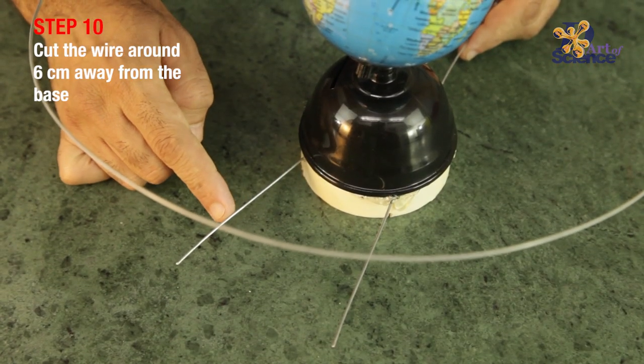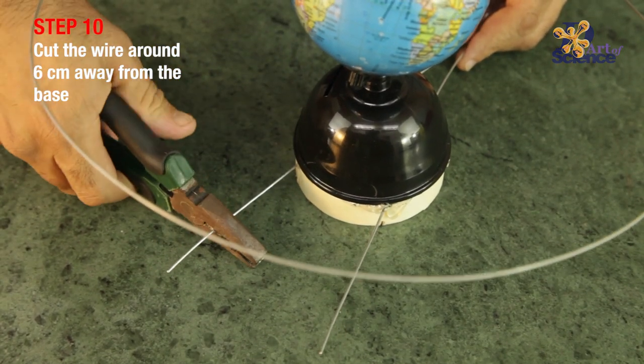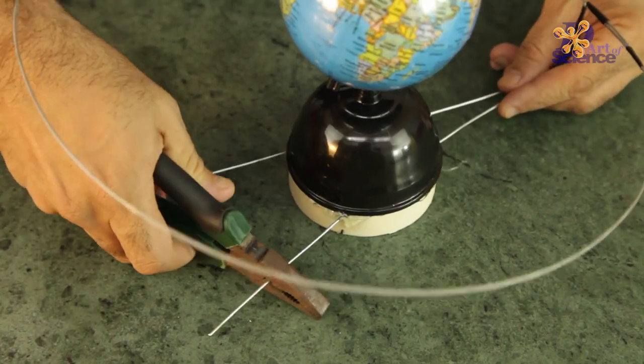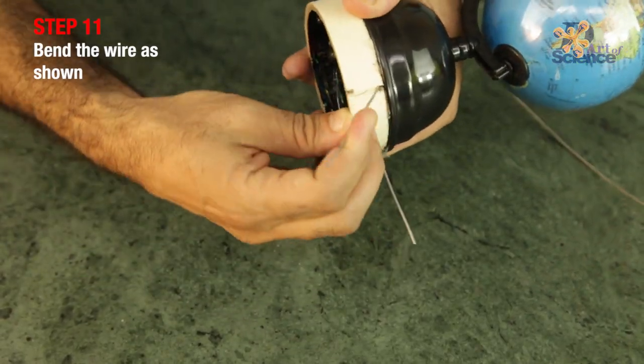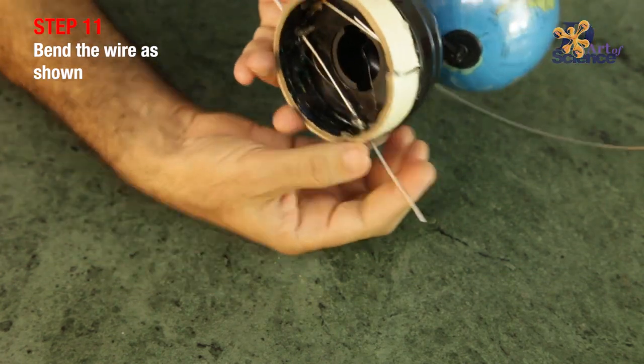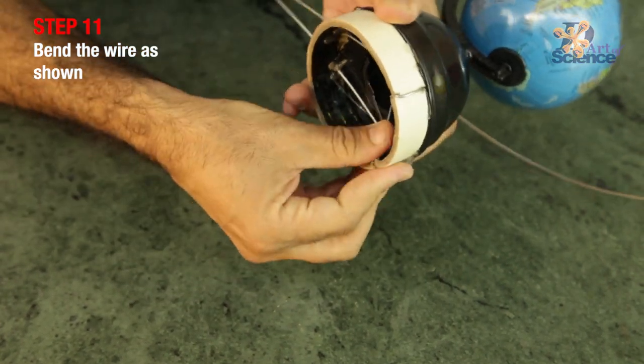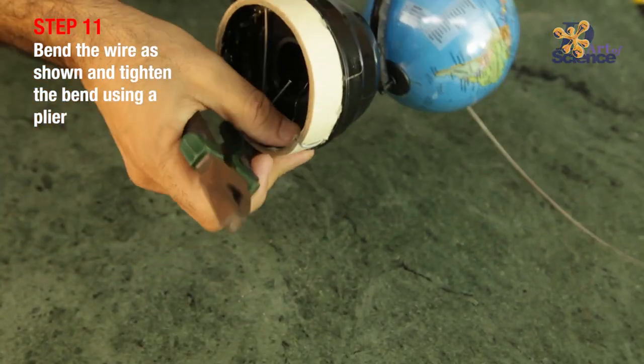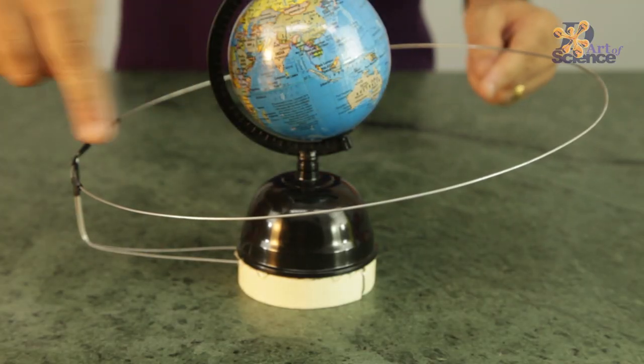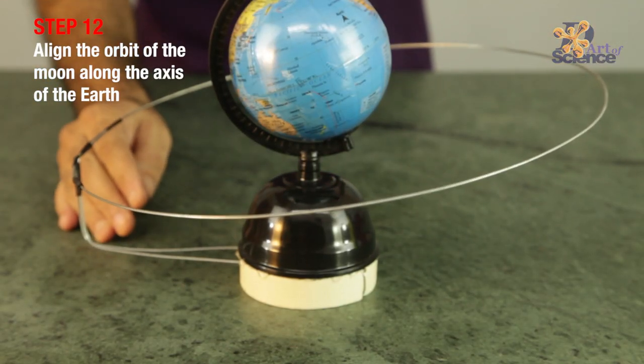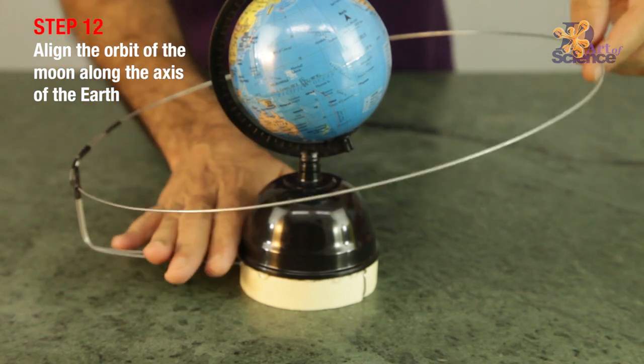Now cut the wire about 6cm from the base and then bend it as shown and tighten the bend using a plier. Now you need to correct the angle of the orbit of the moon to almost align it to the angle of the earth.